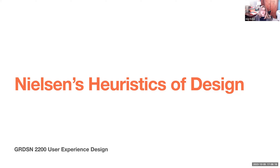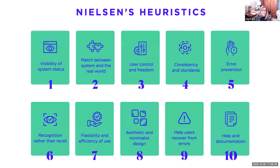Today we're going to talk about Nielsen's heuristics of design. These are a classic — the Norman Nielsen Group created 10 rules that apply to all products that UX designers work on. These rules are known to be quite tough to respect, especially all at once on the same product. With that said, they act as a standard for great usability, effectively setting the bar for all design. Let's go through them.